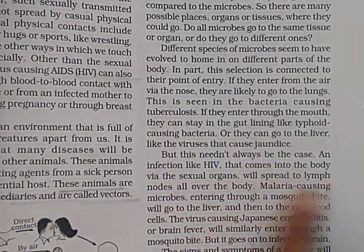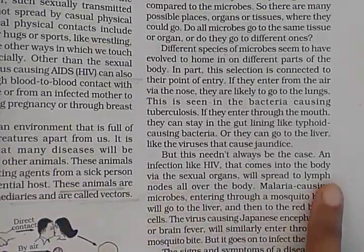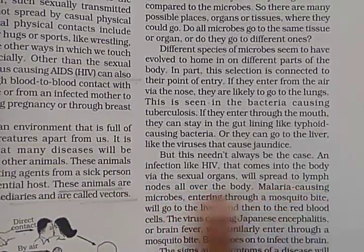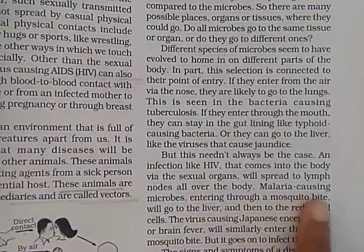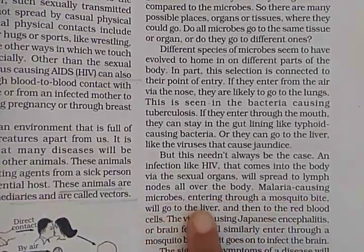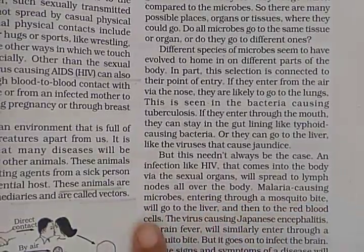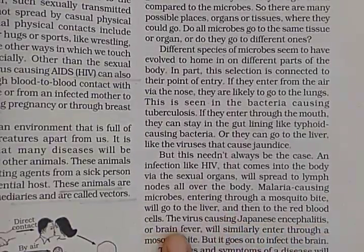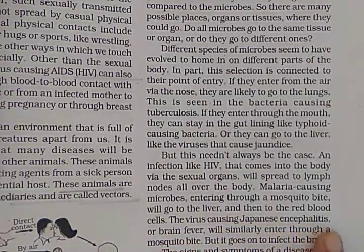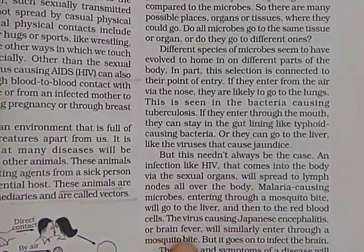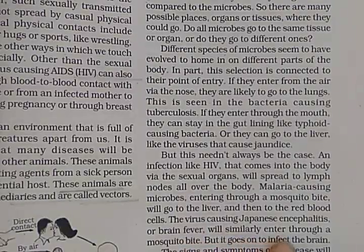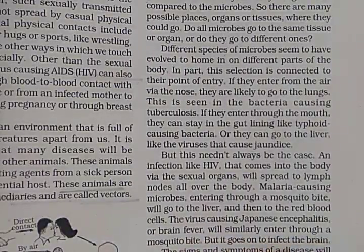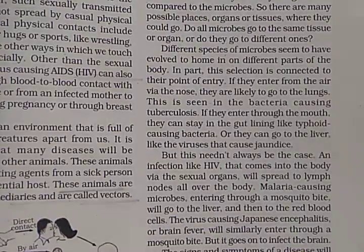But this need not always be the case. An infection like HIV that comes to the body via the sexual organs will spread to lymph nodes all over the body. Malaria-causing microorganisms, entering through a mosquito bite, will go to the liver and then the red blood cells. The virus causing Japanese Encephalitis, or brain fever, will similarly enter through a mosquito bite, but it goes on to infect the brain.